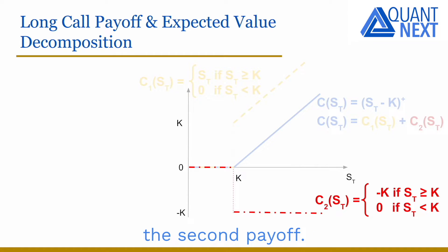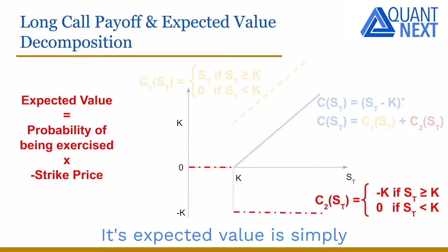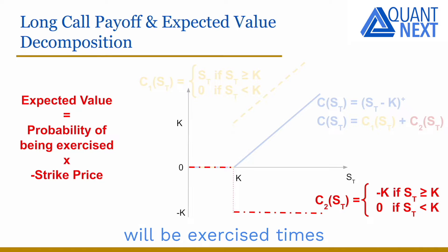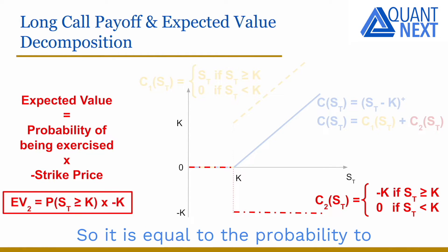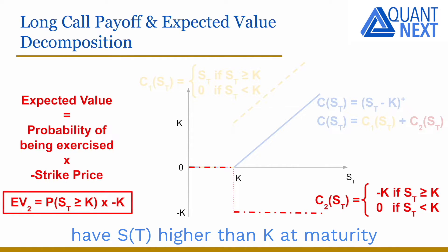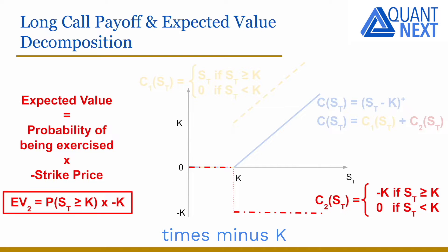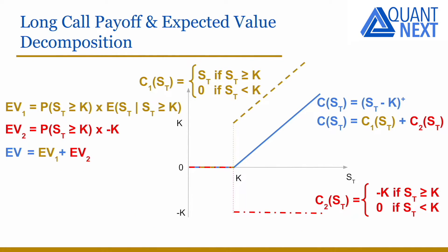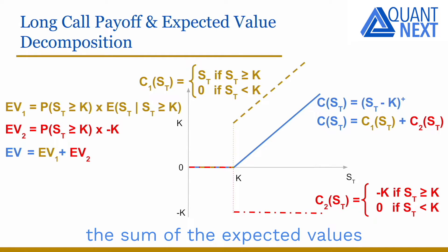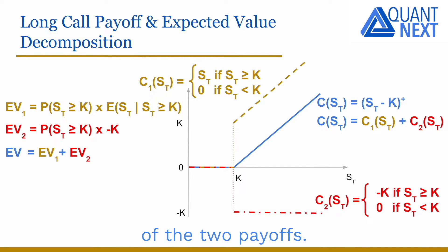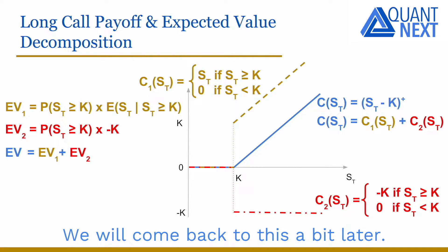The expected value of C2 is simply the probability that the option will be exercised times minus the strike price. So it is equal to the probability of having ST higher than K at maturity times minus K, with K the strike price. And so the expected value of the call option is equal to the sum of the expected values of the two payoffs. We will come back to this a bit later.